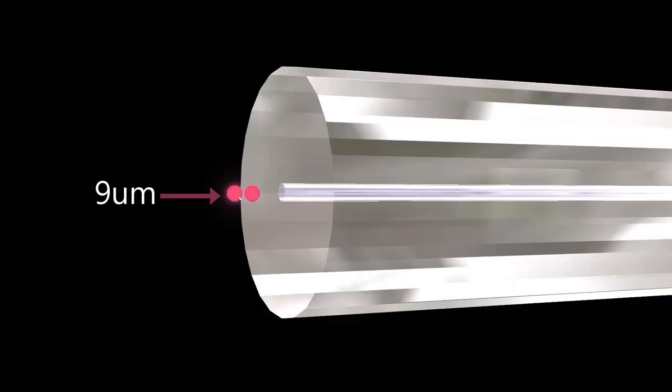But what if we shrank the core down to a mere 9 microns? Then our little photons would have to pretty much line up in single file to squeeze through the core. This results in much less dispersion, but it does have some downsides.